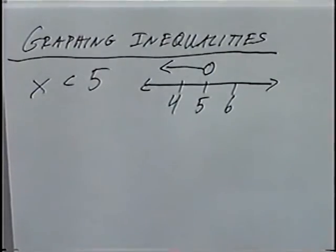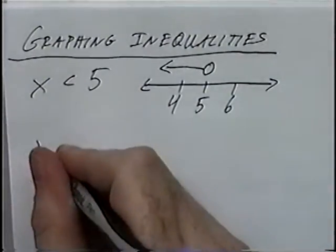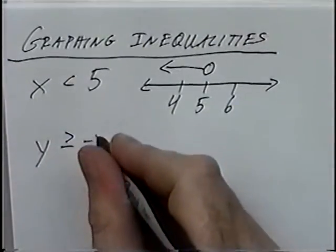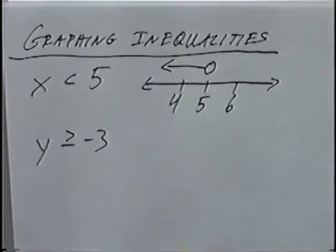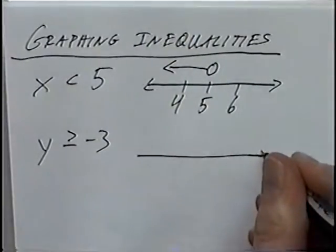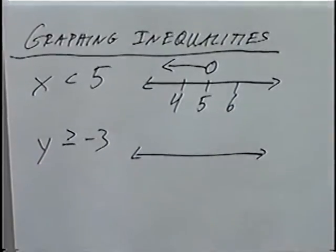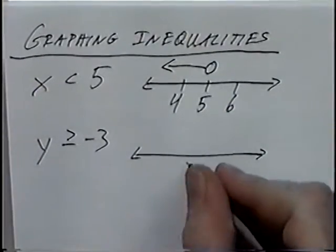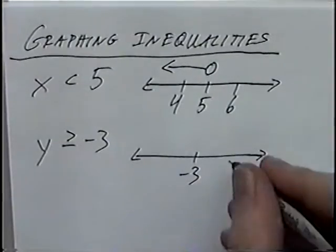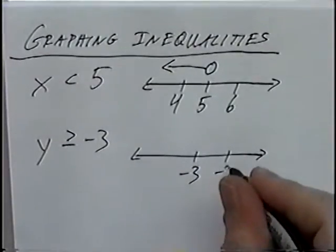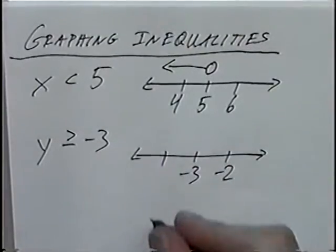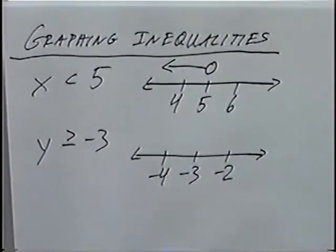Second and last question for this section: y is greater than or equal to negative 3. Graphing a single variable means we draw a single number line. I'll put negative 3 in the middle of the number line, with negative 2 to the right and negative 4 to the left.